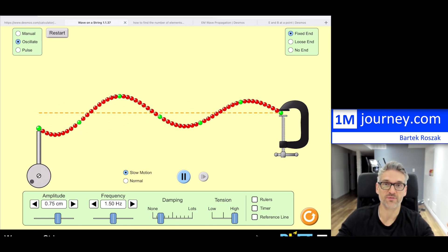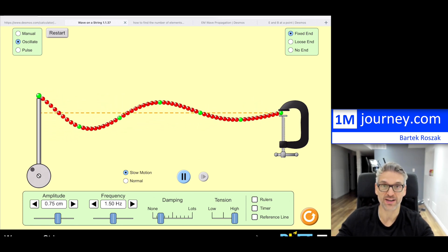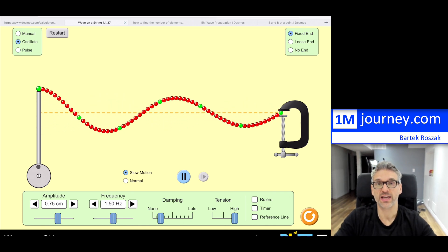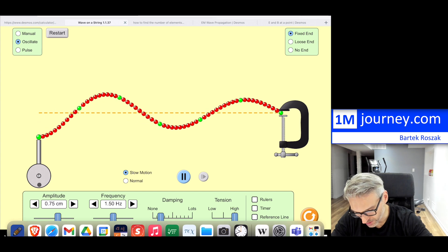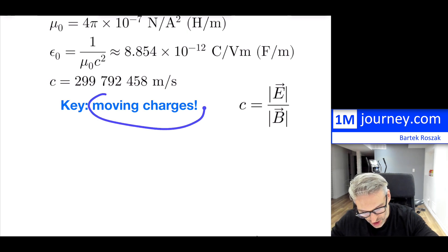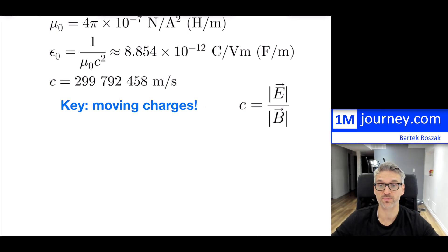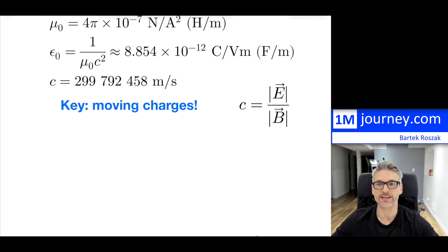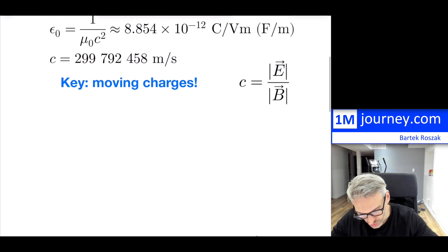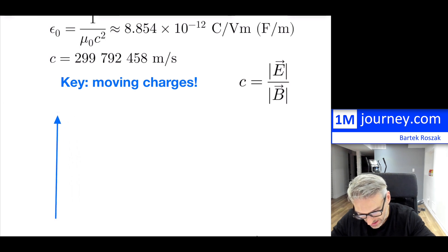But if you have a vacuum, how are these electromagnetic waves propagating through vacuums? That's the ultimate question, and I want to give you the intuition behind it. Our key is going to be moving charges. Charges — not necessarily particles, although they can be — moving charges play a role in the creation of electric fields and magnetic fields. These waves also propagate through other mediums, not just vacuums.